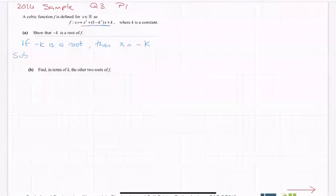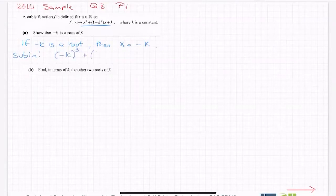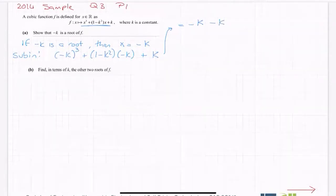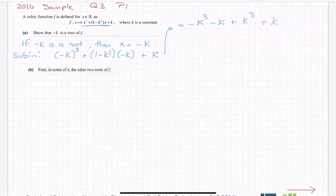So then subbing it in, my x cubed, so I have minus k times cubed plus 1 minus k squared times minus k plus k. So a lot of k's. So that's equal to minus k cubed plus 1 times minus k is minus k again, and minus k squared by minus k would minus by minus is a plus, and I have k cubed, and then plus the k at the end.